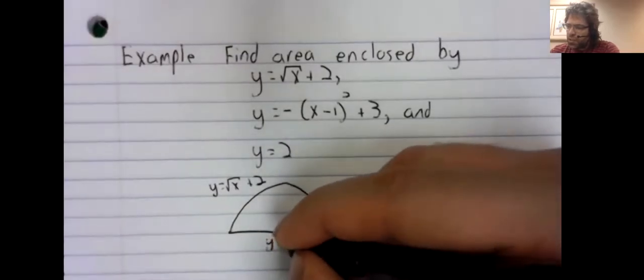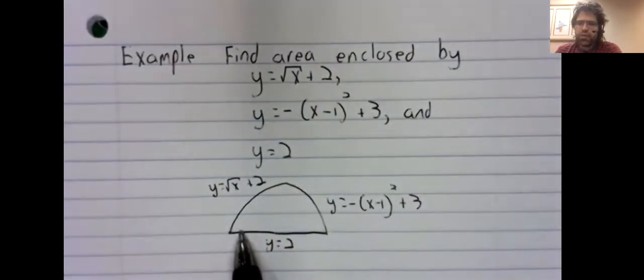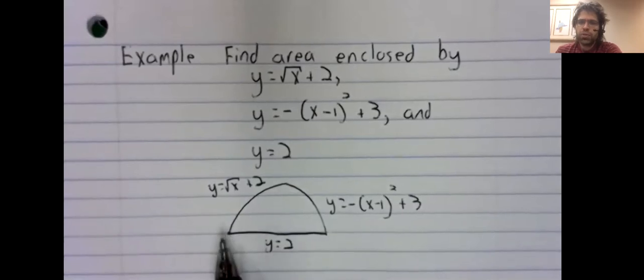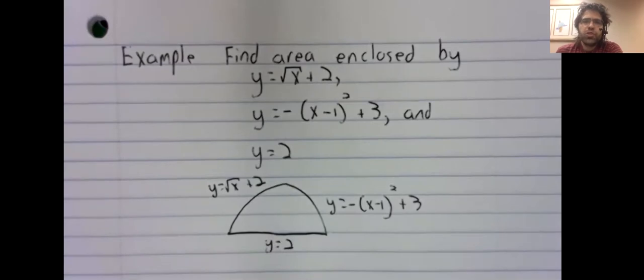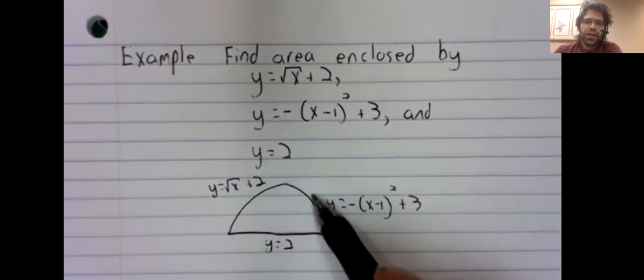And we don't have that here. We have a bottom function, y equals two, but the top function changes. First, it's the square root of x plus two, then it's this quadratic.